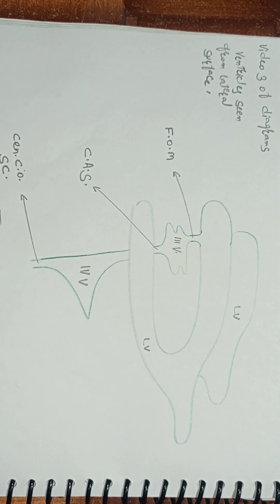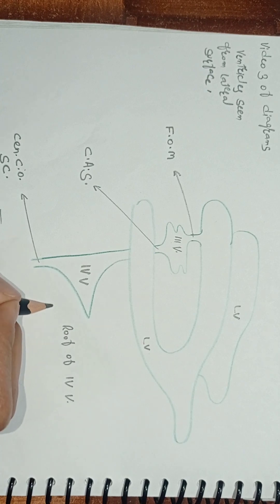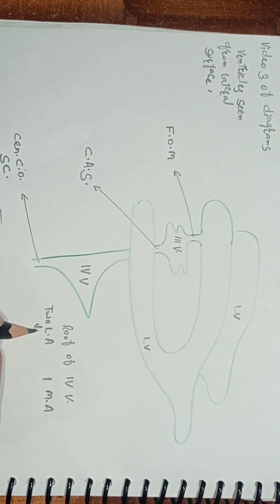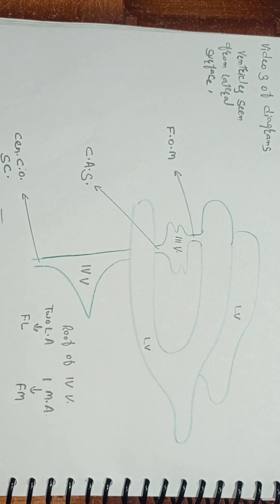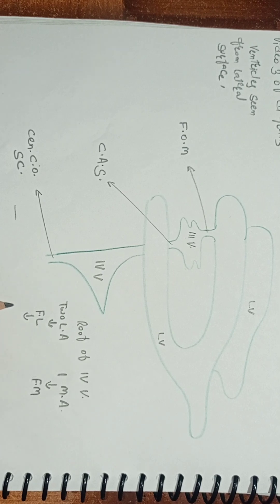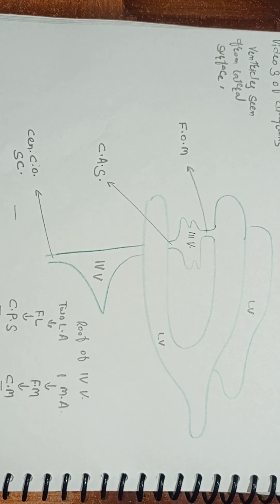In the fourth ventricle, the roof of the fourth ventricle contains two lateral apertures and one median aperture. These two lateral apertures are called the foramen of Luschka. This one median aperture is called the foramen of Magendie. CSF from the fourth ventricle goes to the central canal of the spinal cord, and also through these two lateral apertures — the foramen of Luschka — to the cerebellopontine cistern, and through the median aperture to the cisterna magna. The cisterna magna and cerebellopontine cistern are subarachnoid spaces.